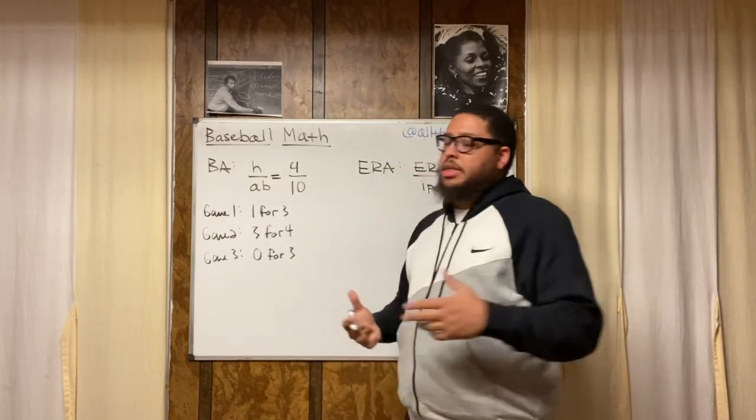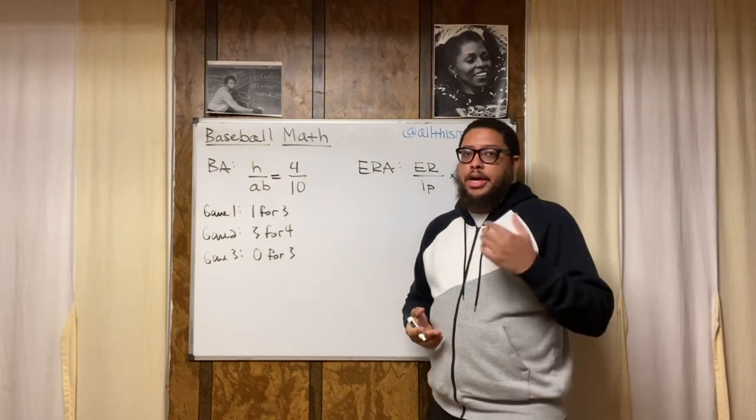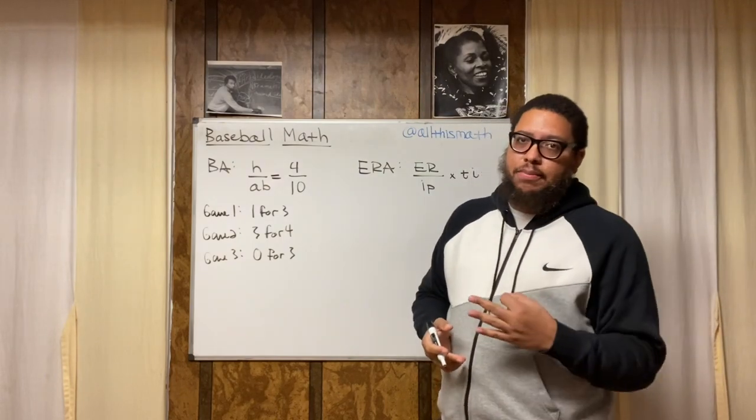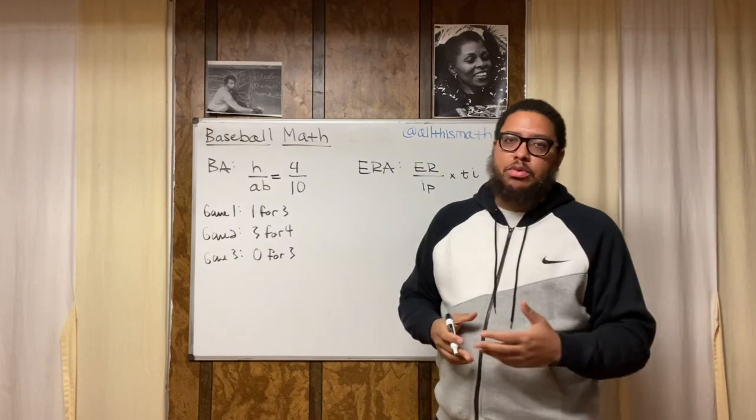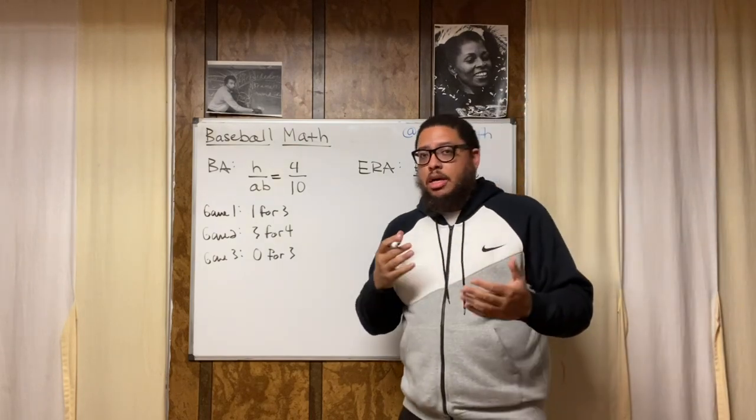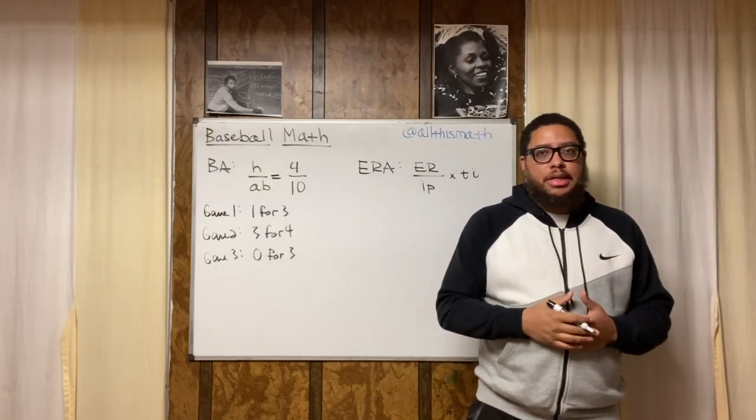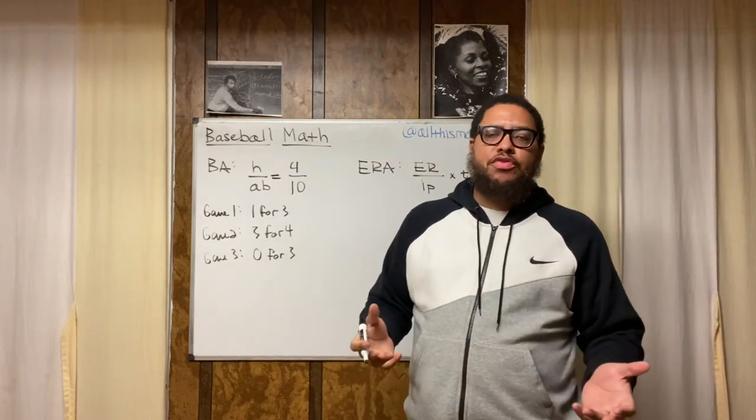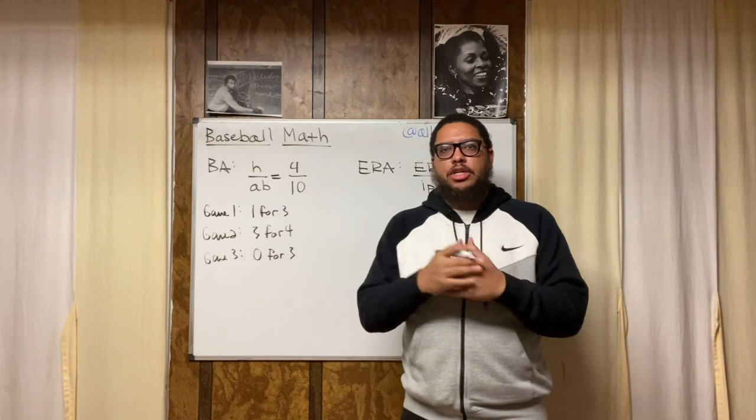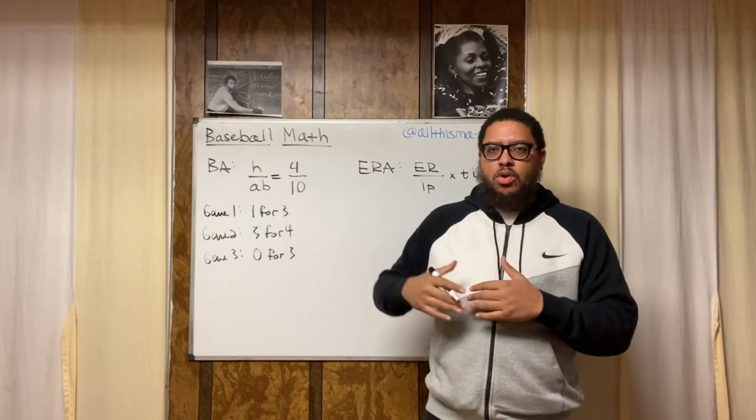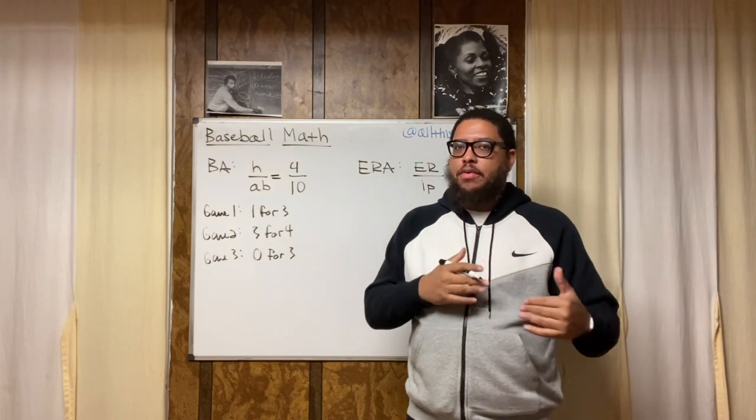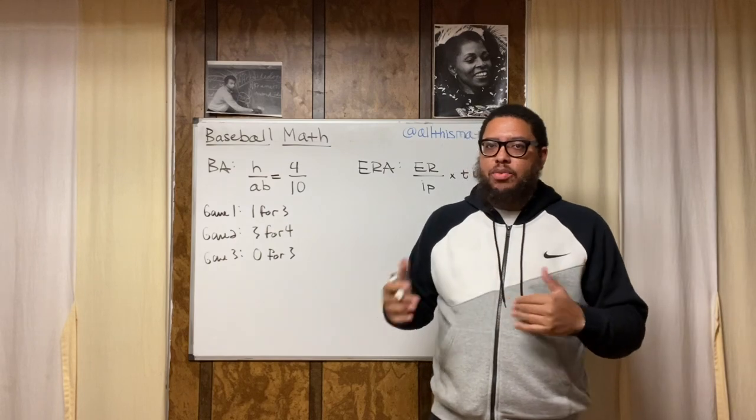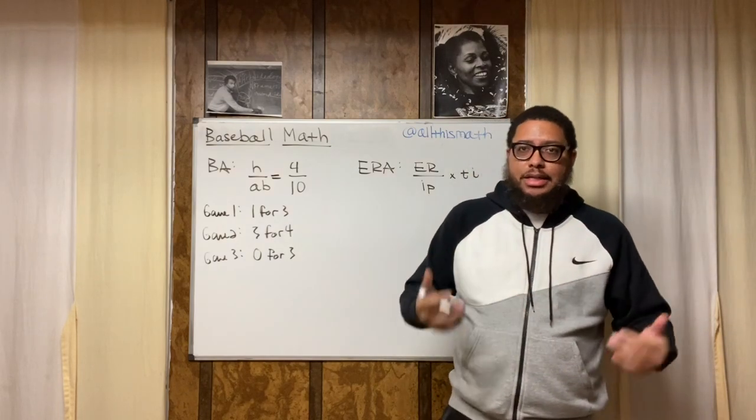Now what you do is you want to convert this into a decimal and you round it to three decimal places. Convert it to a decimal, round it to three decimal places. Now, if you're hitting 300 or better, then you're considered to be a good hitter. But think about what that means for a minute. This is 300 out of 1,000, or equivalent to being three out of ten. 300 out of 1,000 is equivalent to three out of ten.